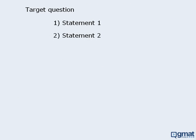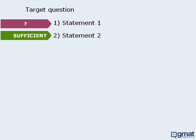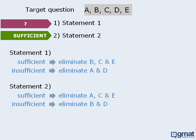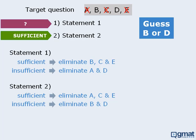One more example. For this question, let's say that we are able to determine that statement 2 is sufficient, but statement 1 is a mystery. By the elimination method, we know that if statement 2 is sufficient, we can eliminate answer choices A, C, and E. So we will guess either B or D.